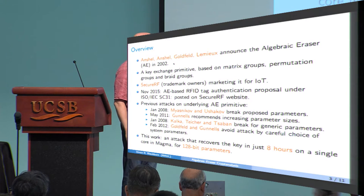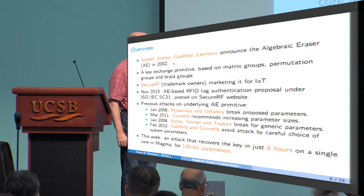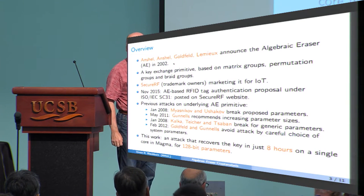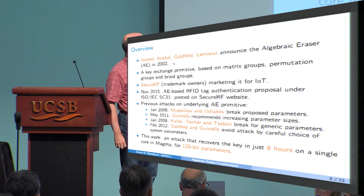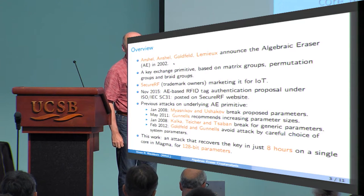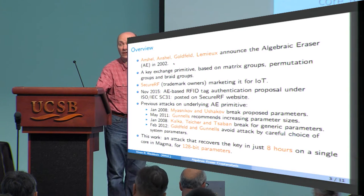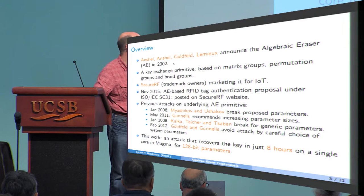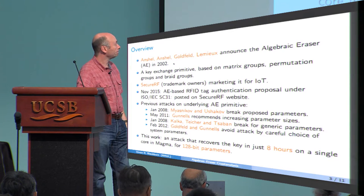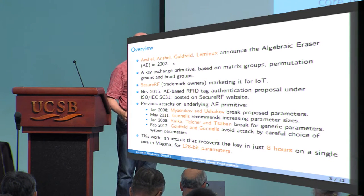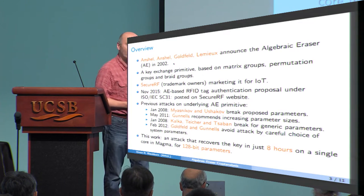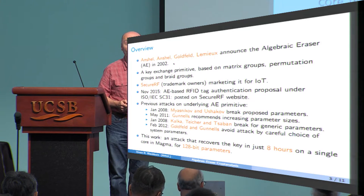So what's this work about? It's an attack that recovers the key for 128-bit parameters. The parameters are provided by SecureRF in just eight hours on a single core in Magma, two gigahertz core. So I can't really imagine a more convincing attack on the scheme. It's quite a technical scheme in lots of ways, the algebraic eraser. So I can't give all the details in a 20-minute talk, so I'll try to keep it as non-technical as I can.